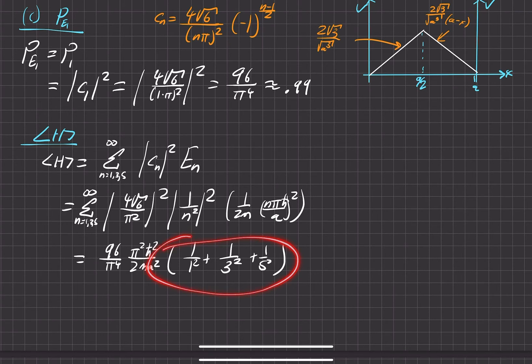This, as you do this off to infinity, actually, this will actually end up being 1 over, sorry. This is actually, what is it, pi? Pi squared over 8, right?